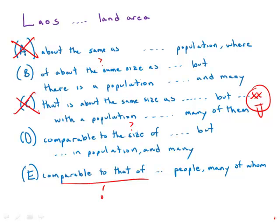Now looking at other parts of the sentence: in B, we have this indirect phrasing 'but in Laos there is a population of' instead of 'Laos has a population of.' That phrasing is wordy and indirect, so we'll get rid of that.